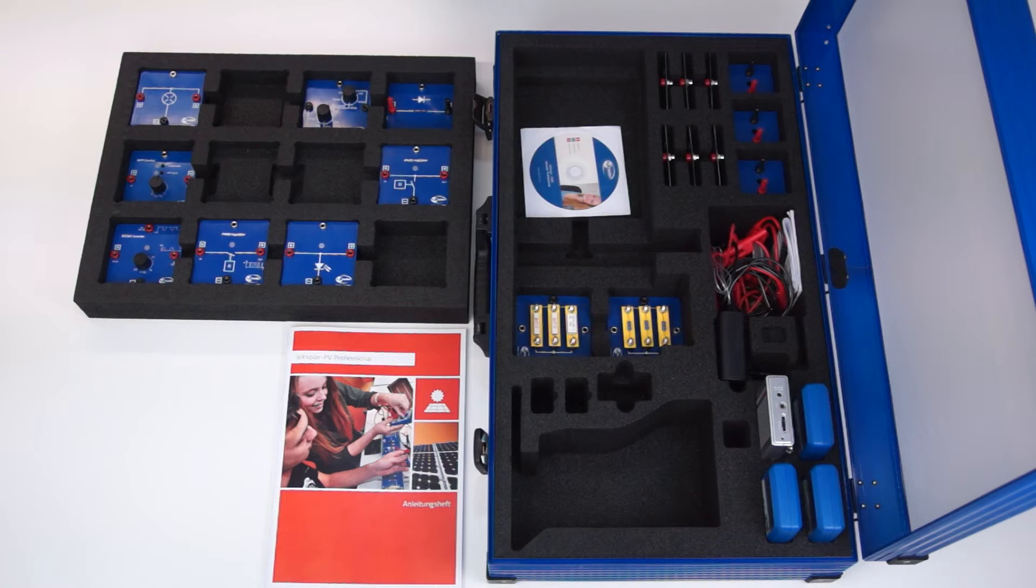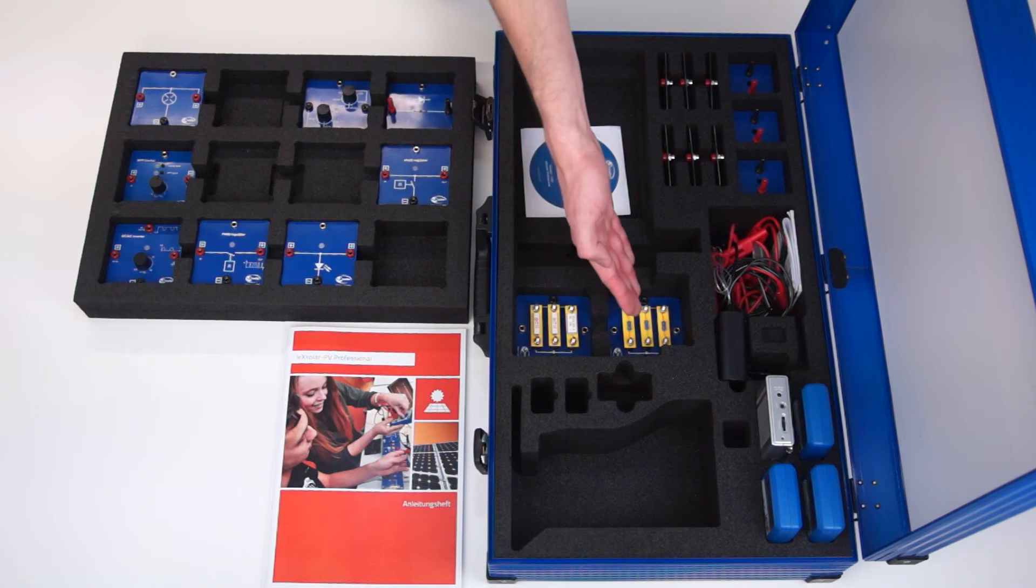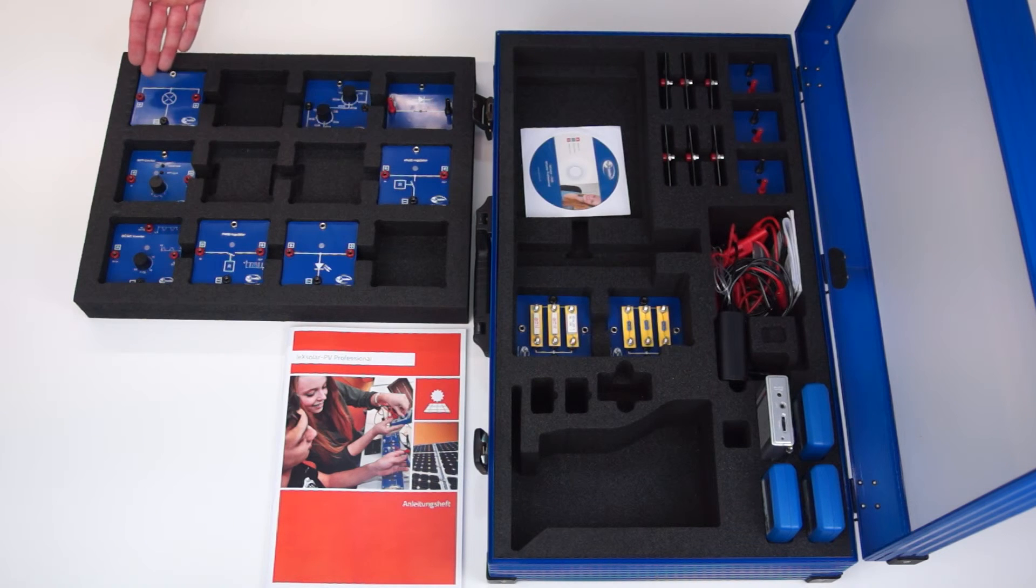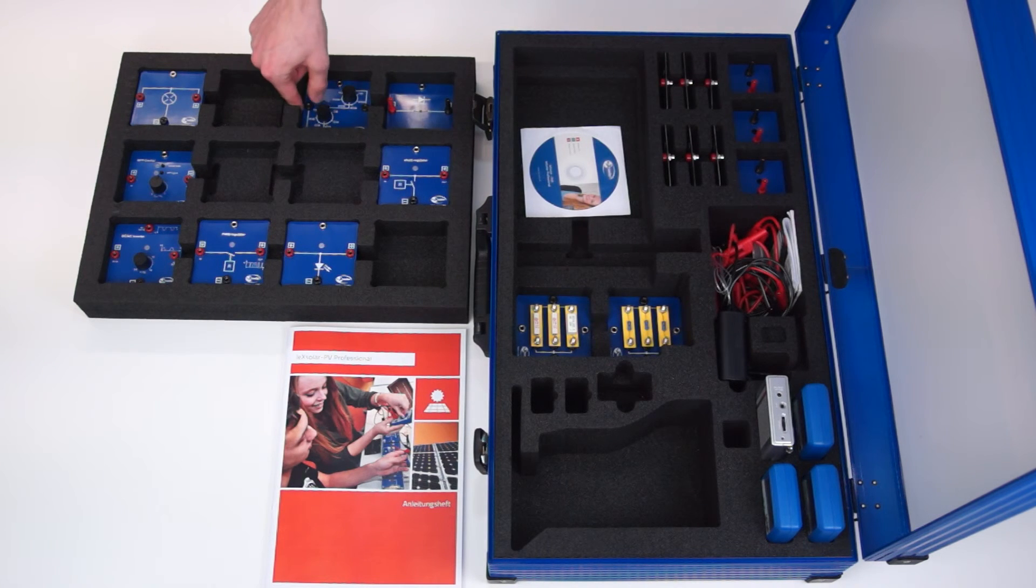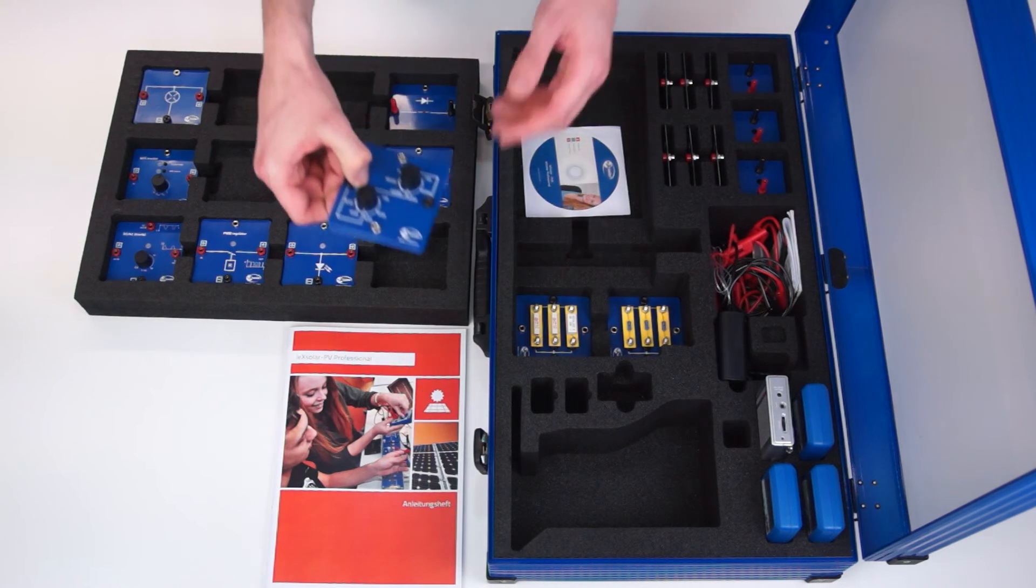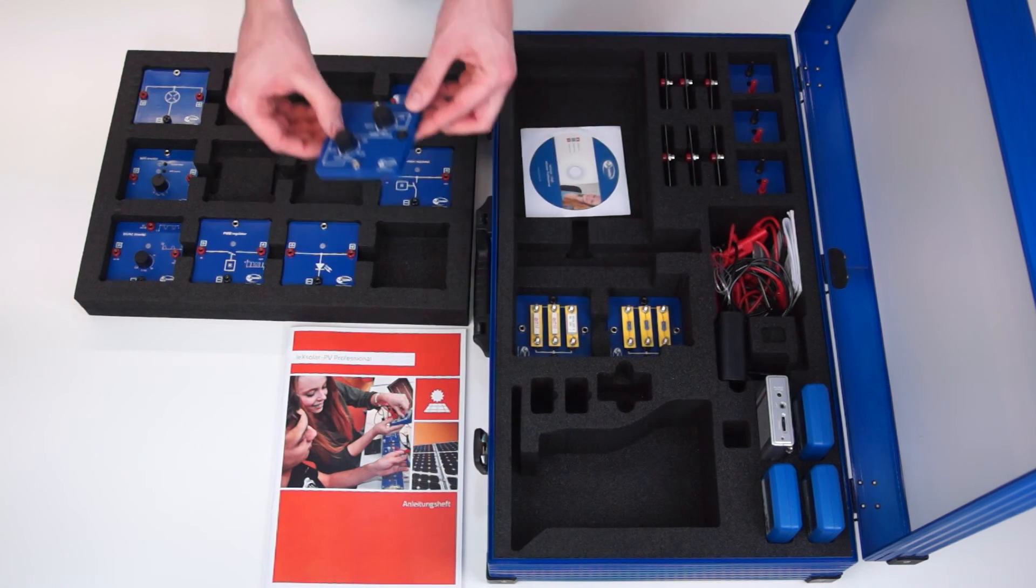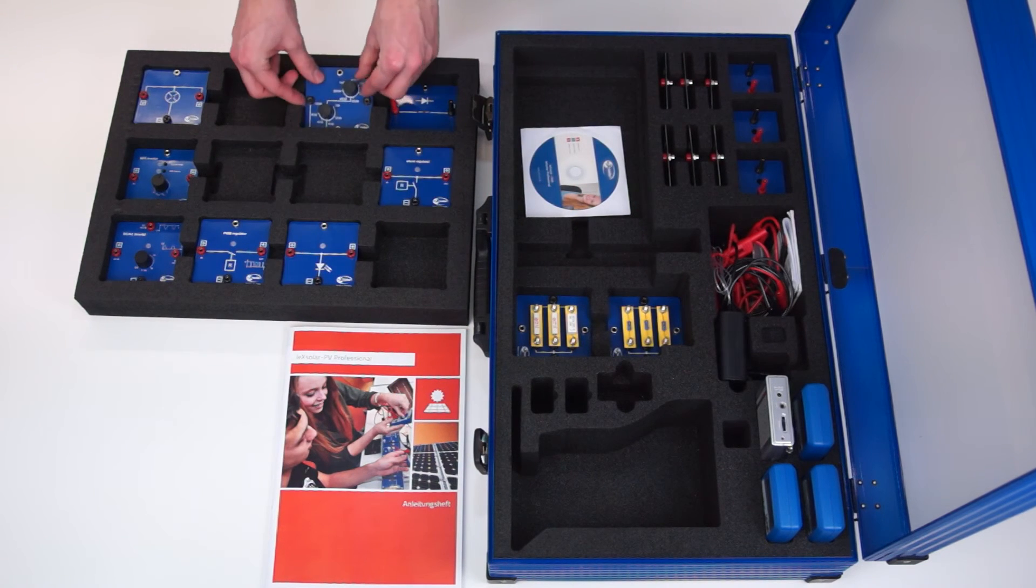In addition to the motor module, there are many more consumers. These include different ohmic resistances, a light bulb module and an LED module. The most important consumer is probably the potentiometer. With this, IV characteristics of the solar module and its dependence on the illuminance and temperature can be examined.